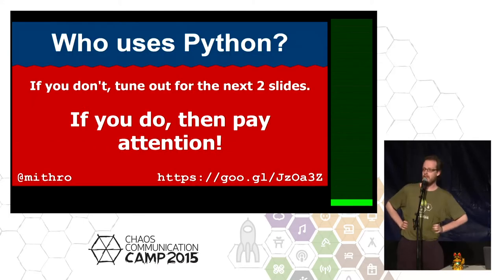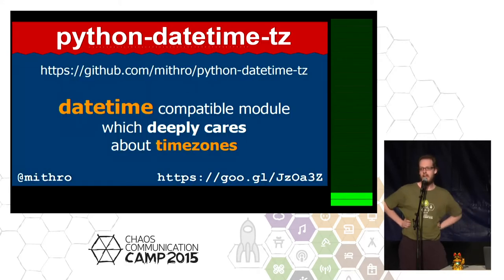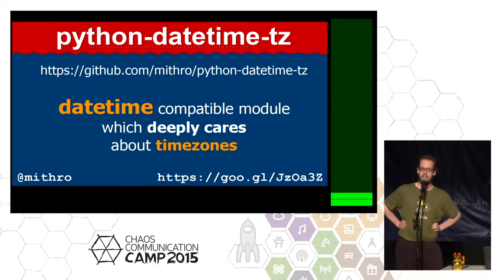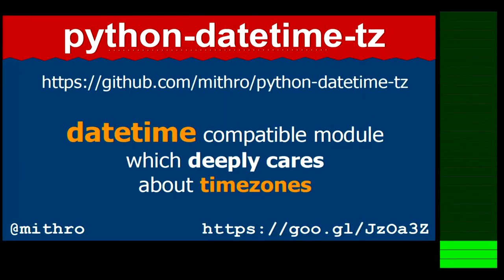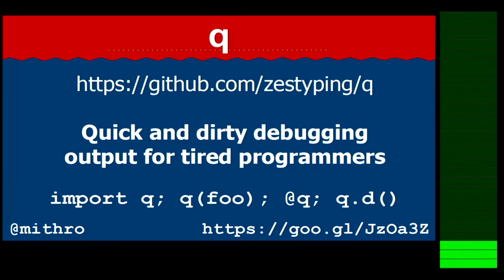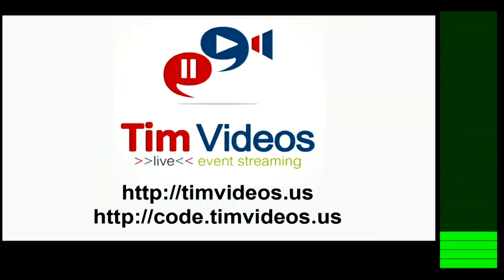If you use Python, these two things should be good for you. If you use dates, use Python DateTimeTZ — it will make your dates correct when you're going around the world. Also use Q if you're tired and you're trying to debug something in production and print won't work. It's basically print on steroids.